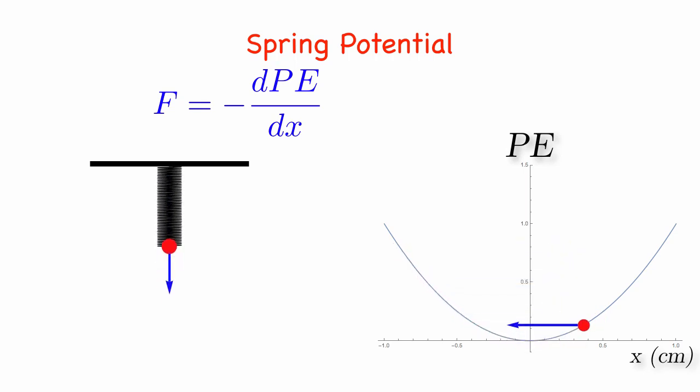In the case of spring potential energy, we see that the slope changes as the mass moves, which means that the force changes with the position of the mass.